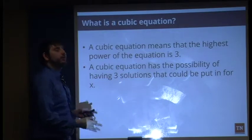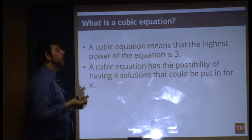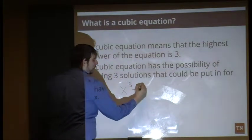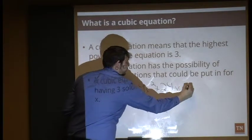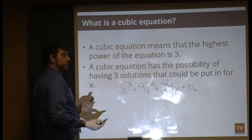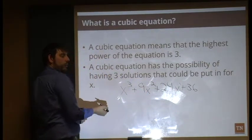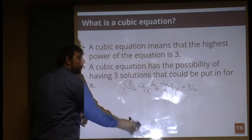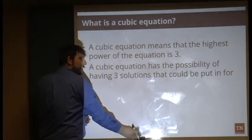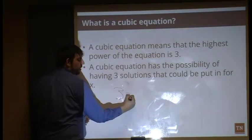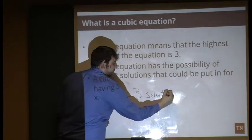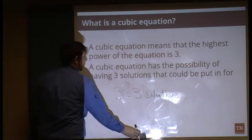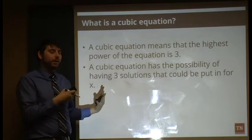Last, you need to understand what a cubic equation looks like. A cubic equation has a highest power of three. Looking at our example, the exponents are an understood one, a two, and a three — the largest is three, making it a cubic equation. More importantly, since the highest power is three, there's a possibility of three solutions. So even if the problem only gives you two solutions to work with, understand there are actually three.